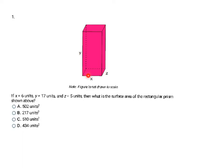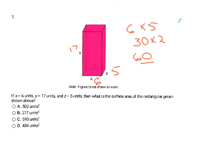The top and bottom faces have the same area: X times Z, which is 6 times 5 = 30. Since there are two of them, that gives 60. The front and back faces are X times Y: 6 times 17 = 102, and two of those gives 204.